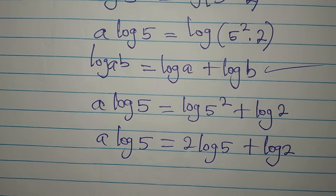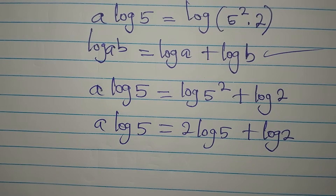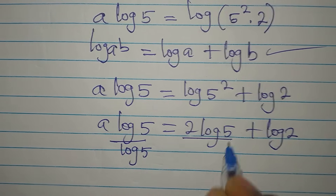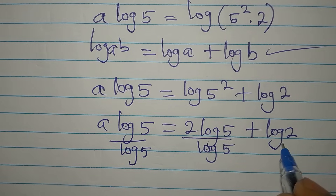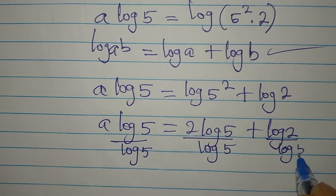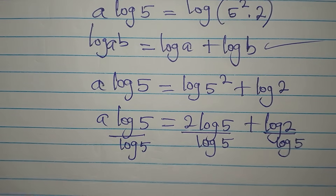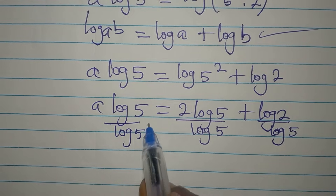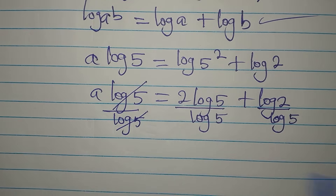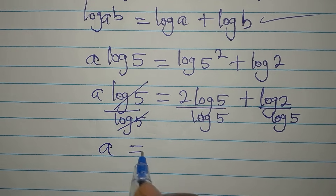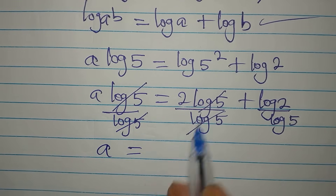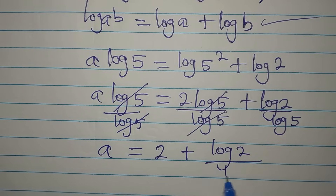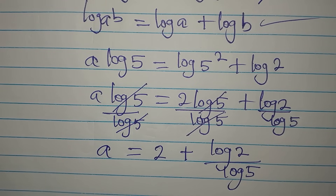To isolate a, I'll divide all terms by log 5. Log 5 cancels on the left, leaving a. On the right we get 2 plus log 2 divided by log 5.